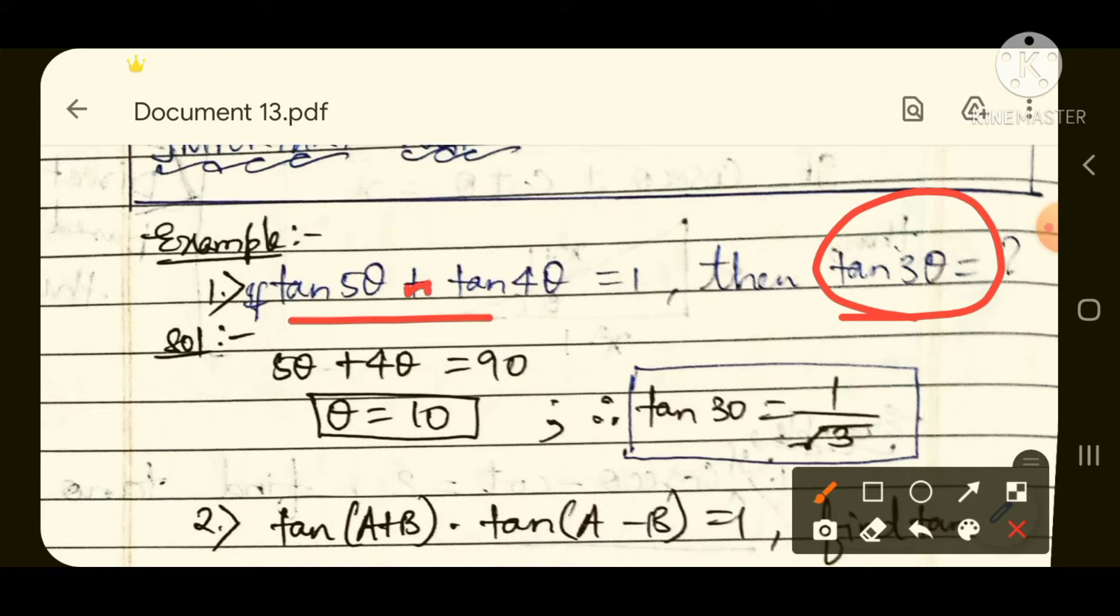For better understanding, I would take a few examples which can prove to be very much beneficial for you all. So here the first example has appeared on the screen: if tan 5 theta times tan 4 theta is equal to 1, then find tan 3 theta.